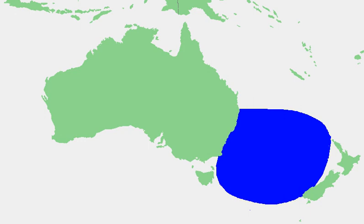Adjoining bodies of water include: to the north, the Coral Sea; to the northeast and east, the Pacific Ocean; to the south and southeast, the Southern Ocean; and to the west, Bass Strait.